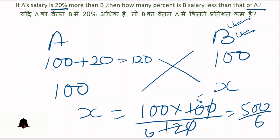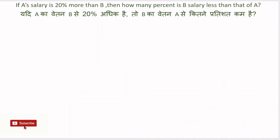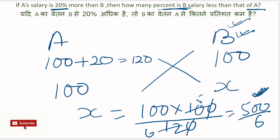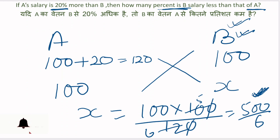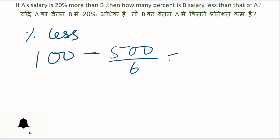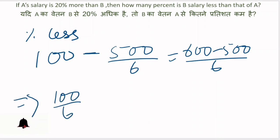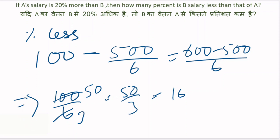Yeh ho jaega 500 divided by 6. Yahaan pe amount nahi poochha hai, percentage poochha hai — kitna percent B ka salary kam hai A se. Jab bhi hum percent nikalte hain, base value 100 lete hain. Percent is less kitna hoga: 100 minus 500 by 6, yani 600 minus 500 divided by 6, jo hai 100 by 6, yaani 50 by 3. Isko solve karenge: 16 aur 2 by 3 percent. Yahaan se answer aa gaya hai.